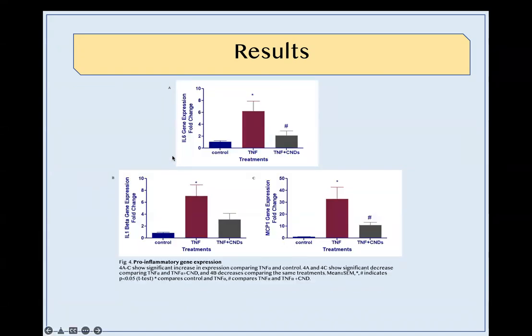In figure 4, we can see the pro-inflammatory gene expressions of IL-6, IL-1-beta, and MCP1 significantly increased when comparing control to TNF-alpha and decreased when comparing TNF-alpha to TNF-alpha plus CND treatment groups. We determined statistical significance using the 2-tail T test, with the p-value of less than 0.05 being considered significant.